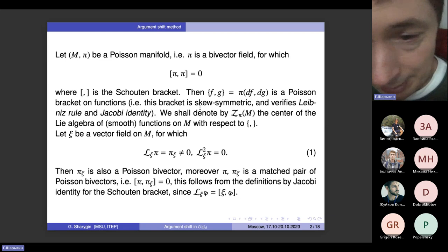It is denoted by Z mod Z sub pi of M, the center of the algebra of smooth functions with respect to this Poisson bracket. That is to say, the space of all functions on M such that the Poisson bracket with anything vanishes. Such functions are often called Casimir functions, or just Casimirs in physical literature especially.